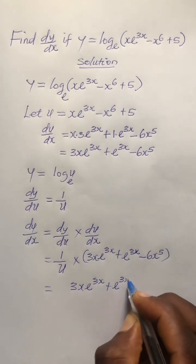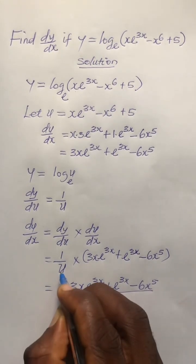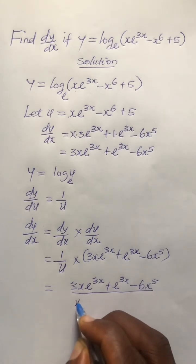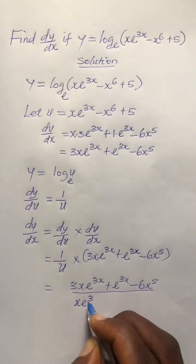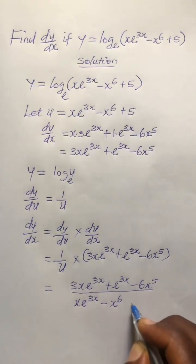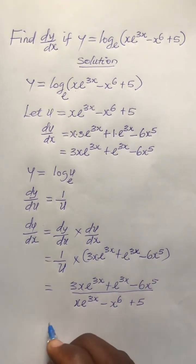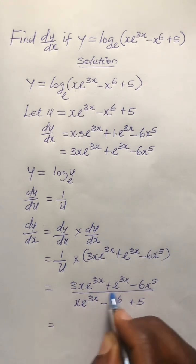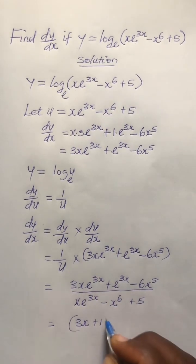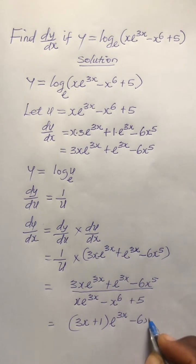This gives us 3x·e^(3x) plus e^(3x) minus 6x^5 all over u, and the value of u has been given as x·e^(3x) minus x^6 plus 5. We can factorize the numerator — the common factor is e^(3x) — so we get (3x + 1)·e^(3x) minus 6x^5.